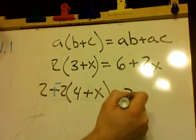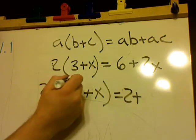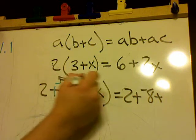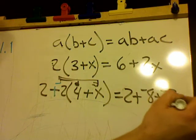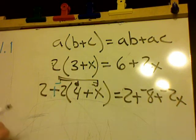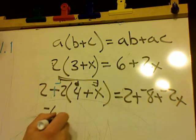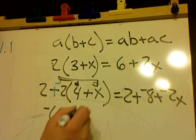So I take my 2 outside here. Take negative 2 times 4, which would be negative 8. And negative 2 times X, which would be negative 2X. Add my like terms here together. So I've got negative 6 plus negative 2X.